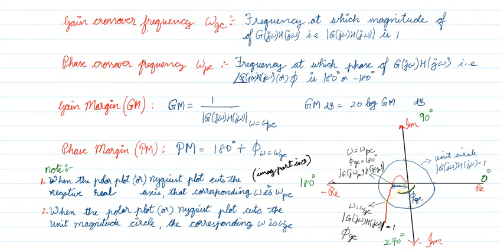Then what about phase margin? Phase margin is 180 degrees plus the phase angle at ω_gc. To find the phase margin, first identify the gain crossover frequency, then find out the angle at that frequency, then add 180 degrees to get the phase margin.